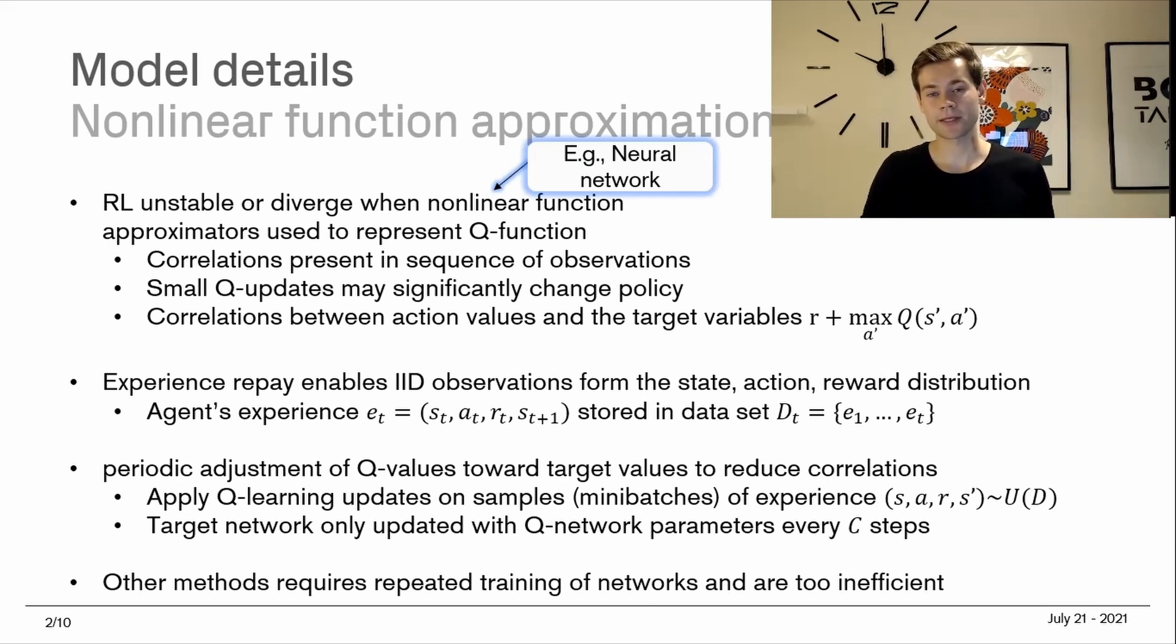Lastly, there's a big correlation between the action values and the target variables, which also becomes problematic. There are a few ways of dealing with these, but they're not really suited for this task. The reason why is they normally require retraining of the network several times from the beginning. For these big networks that were applied for this model, that is simply not feasible. It would simply take too much time and require too much computational effort.